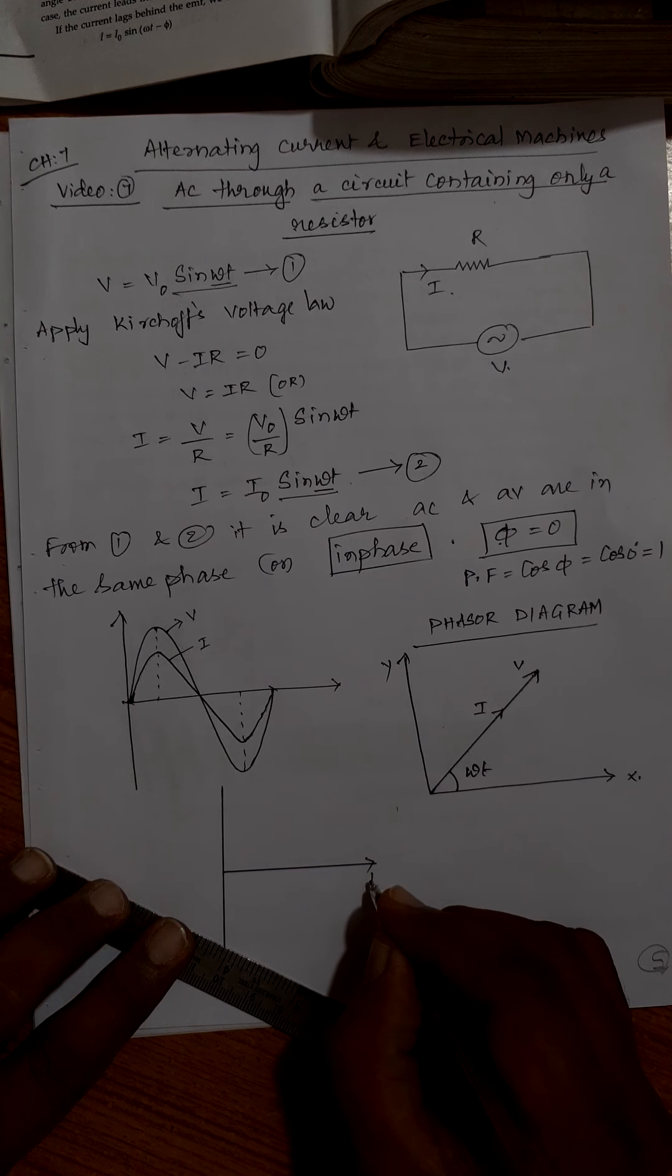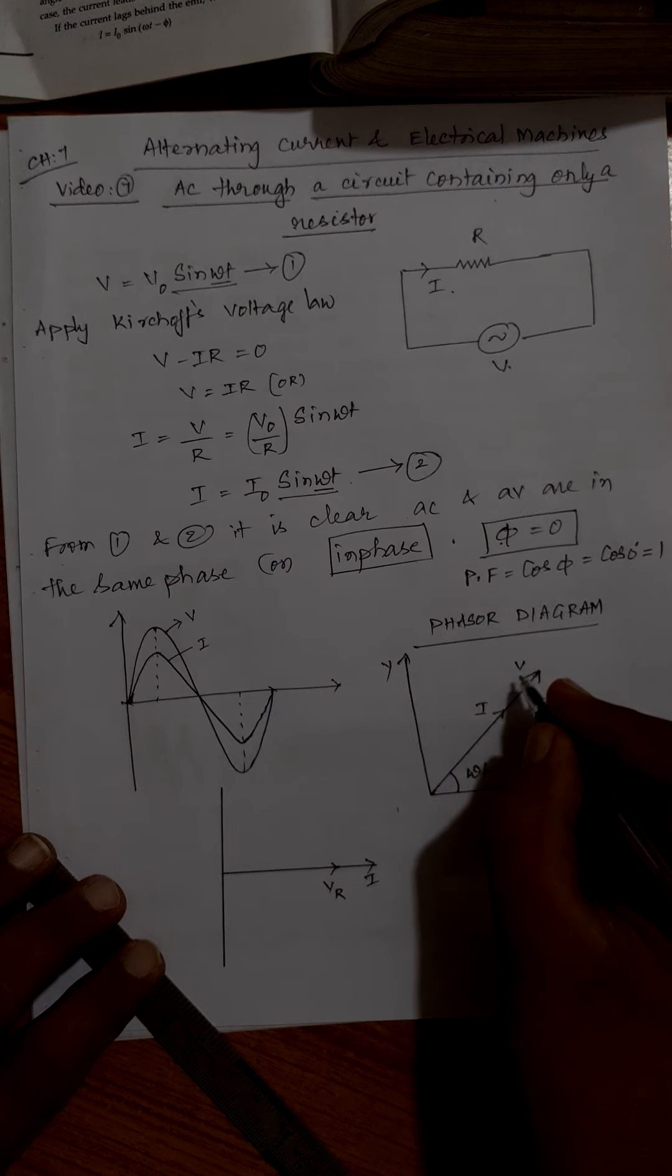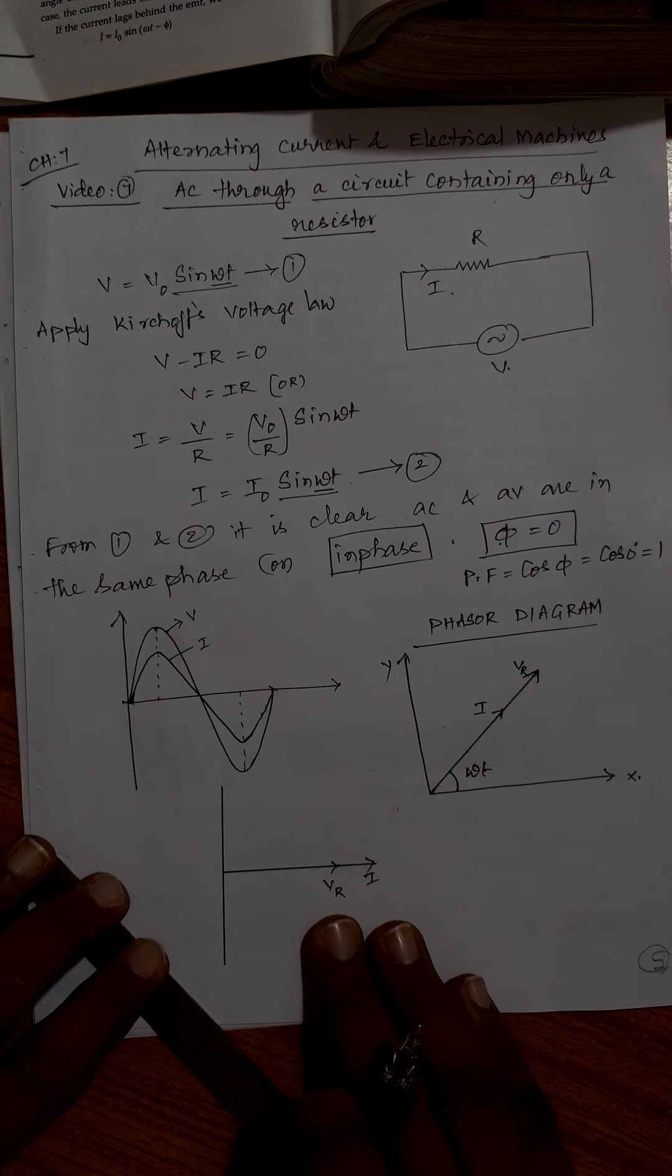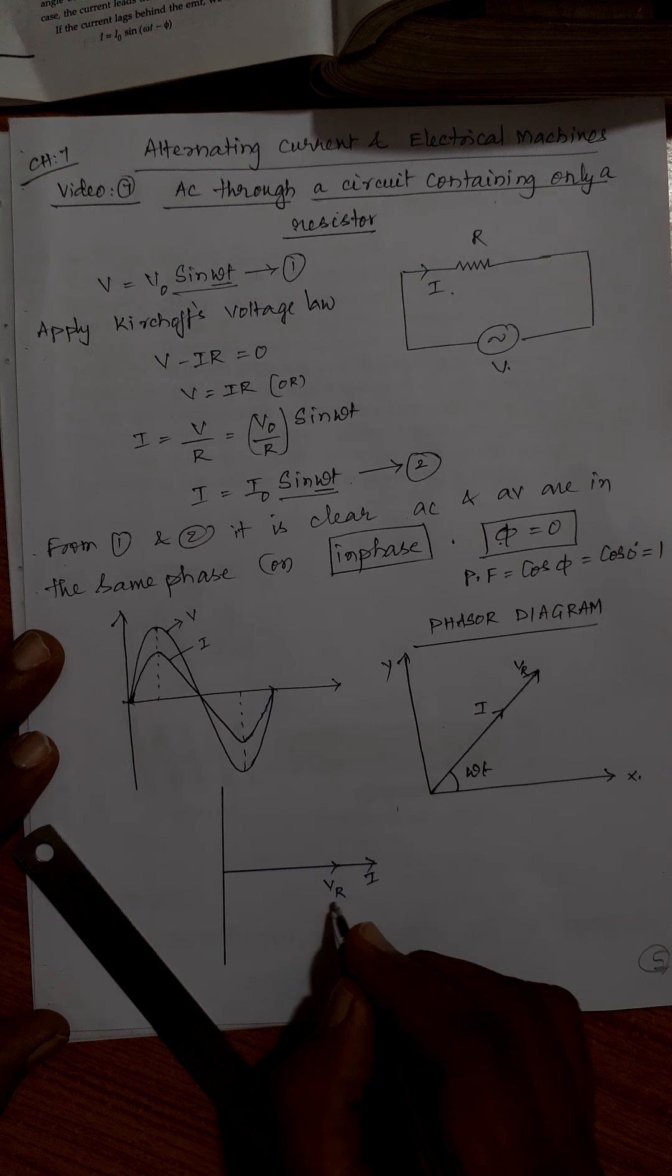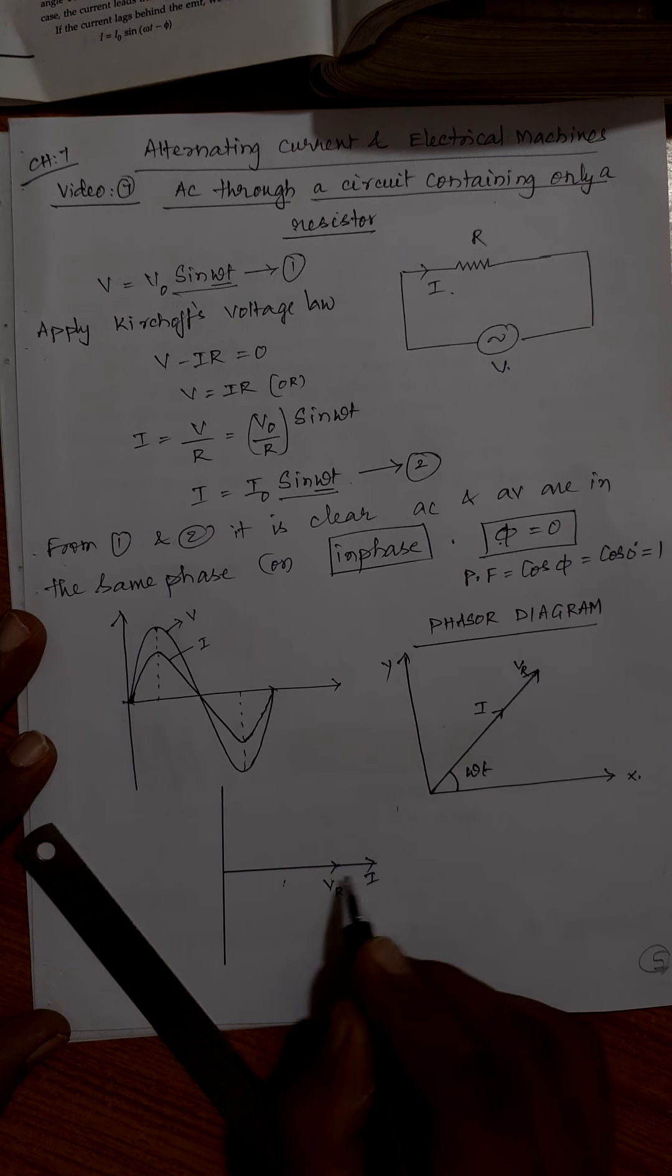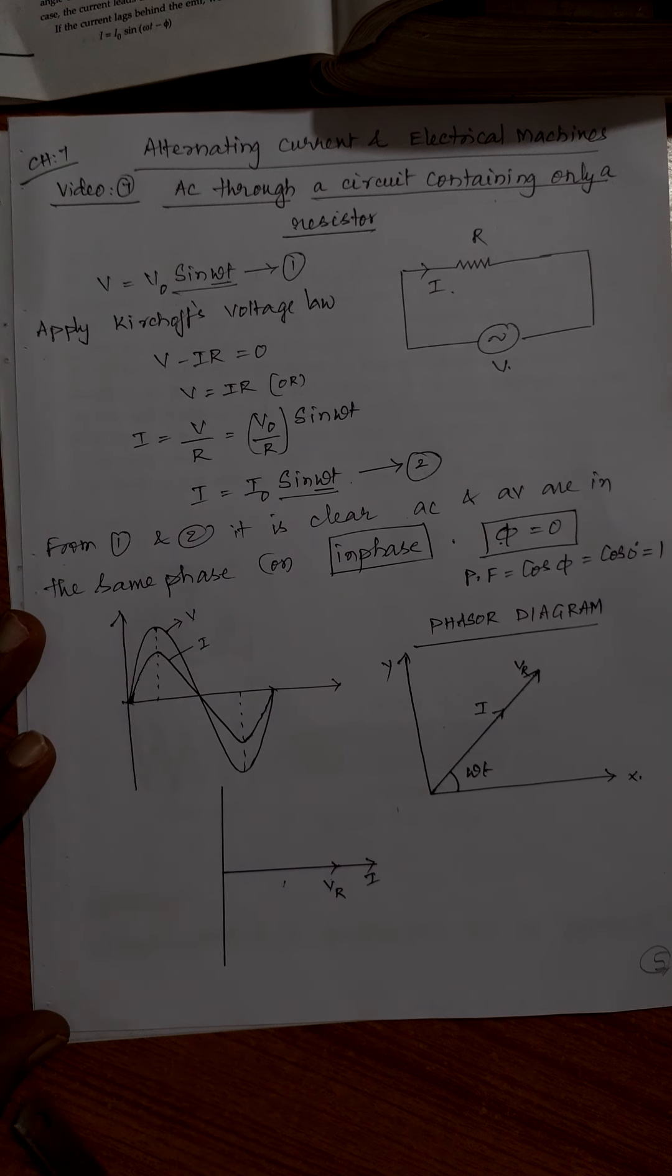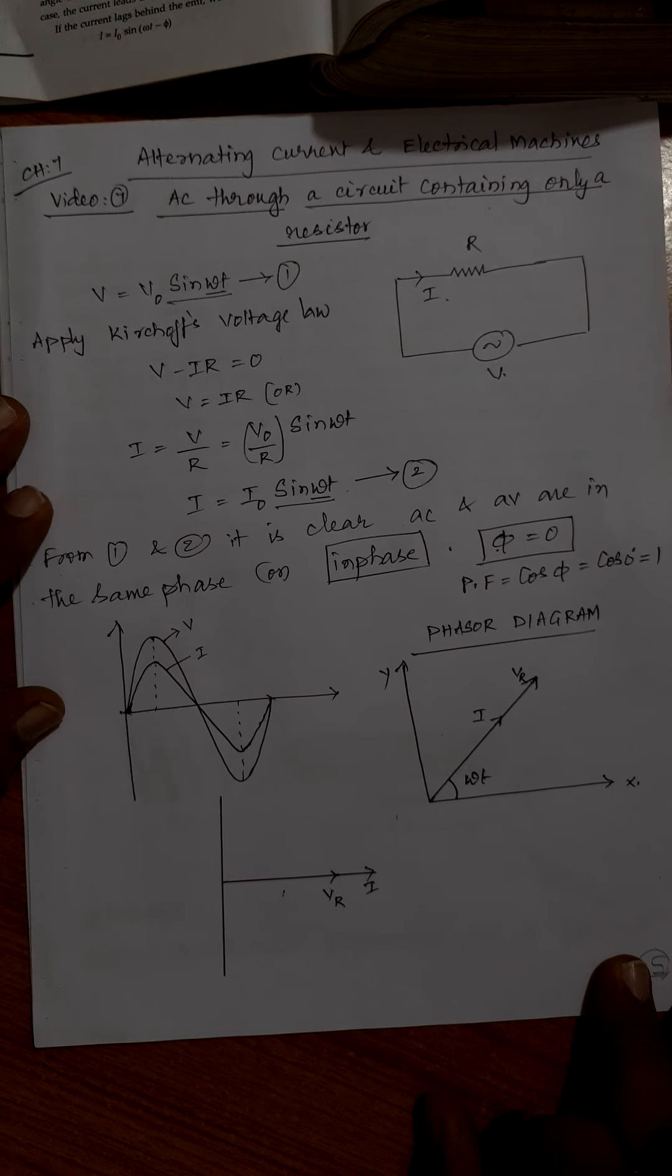What I generally represent, I always take current along x axis. Take the current here, voltage also in the same phase. Represent VR here. VR means voltage across resistance. Now also it shows that there is no phase difference between them, because current and voltage both are along the same line.